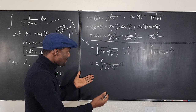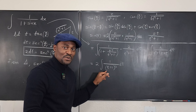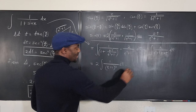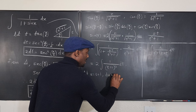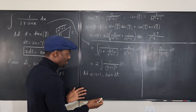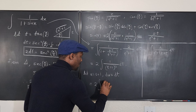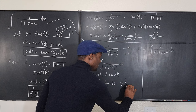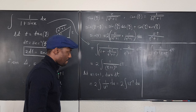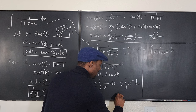Let u equal t plus 1, so du equals dt. Substituting back, we have 2 times the integral of 1 over u squared du, which equals 2 times the integral of u to the negative 2 du. Integrating gives negative 2 over u plus C.